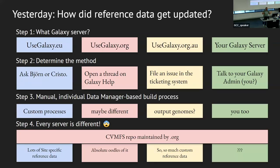If you look across the class of different Galaxy servers — usegalaxy.* servers up here and maybe yours at the end — how do data get updated in these different servers? Each server probably has a different method, some more manual or less controlled than others. Our data on usegalaxy.org are fairly out of date, largely because there is a manual process required. We build it, then I have to dump it over to CVMFS. Used to be multiple people who could do this, but now it's pretty much just me.